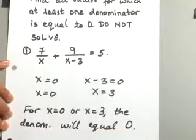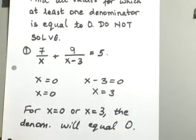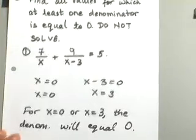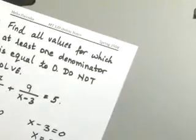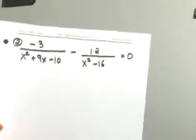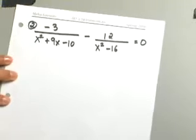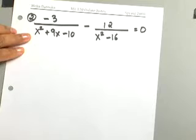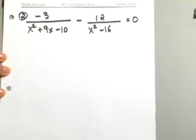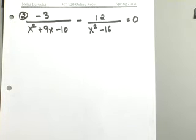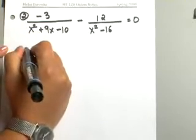If we were solving this equation, we would want to discard zero or three if they showed up in our solution set. Let's look at one more example — same thing: find all the values for which the denominator equals zero, but we are not trying to solve this. Here your denominators are polynomials. The first one is a trinomial and the second one is a binomial. Take each denominator and set it equal to zero.